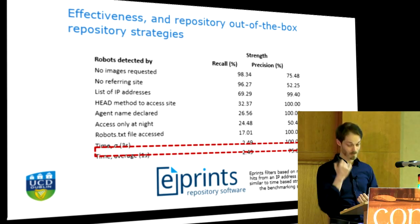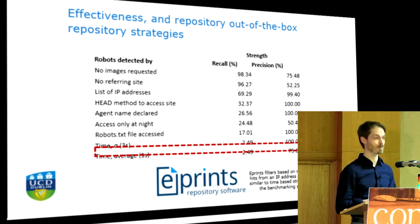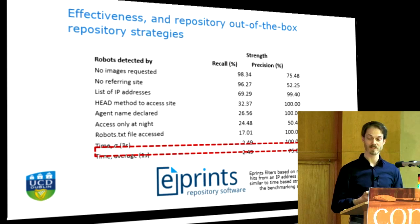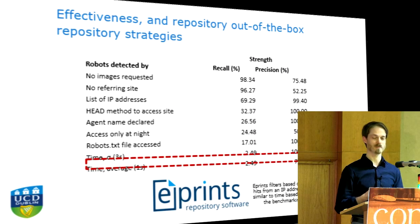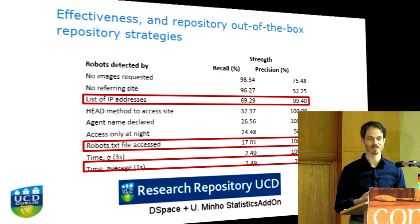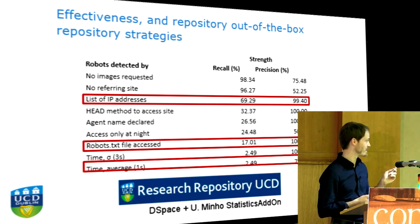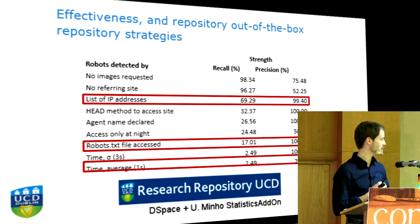At UCD, we use a statistics add-on to the DSpace software. We use IP address lists and access to the robots.txt file — every website has a robots.txt file. Whenever I see spikes in downloads, I check that spike to see if it's human-generated — did somebody find a paper, find it interesting, and email it to everyone in their company and then everyone downloaded it at once? Or did a robot just start hitting it 100 times a minute? I also look at agent names. Everything other than the robots.txt part for UCD is done manually.